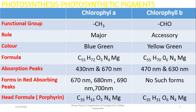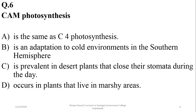Question 6: Chlorophyll A and B have further differences including functional group, role, color, and formula, which vary due to their functional group difference. Absorption peaks vary, and further forms exist in chlorophyll A. The head formula also varies due to the difference in the head structure. CAM — Crassulacean Acid Metabolism — is prevalent in desert plants that close stomata during the daytime, so option C is preferable here.